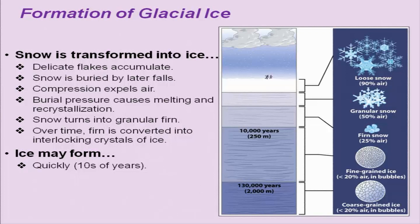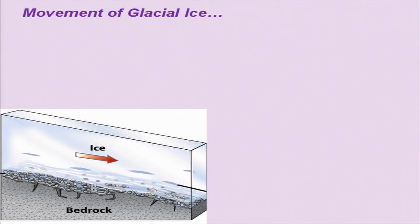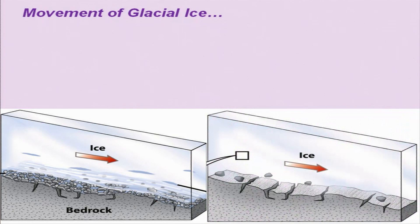Ice may form quickly — taking tens of years — or slowly, taking thousands of years. If you study snow, the older snow will be coarser and more crystallized in form. Movement of a glacier is again an important aspect for understanding past history. It is difficult to just look at the surface of the snow and determine movement, but when a snow block moves it results in the development of landscape and leaves marks on the rock surface.